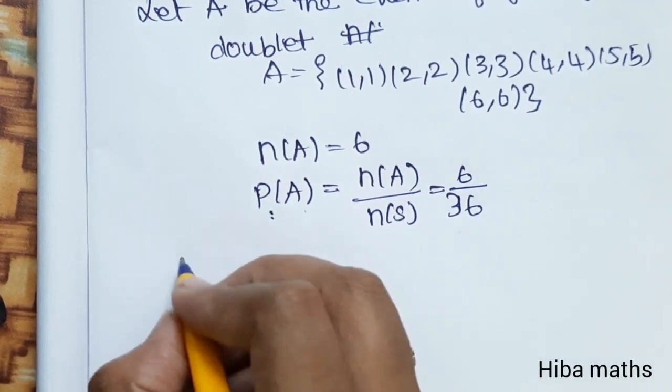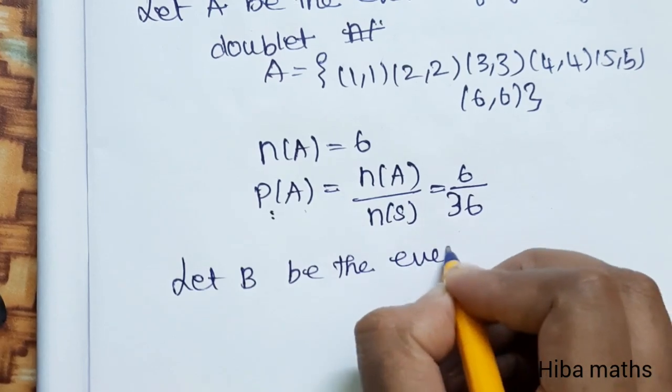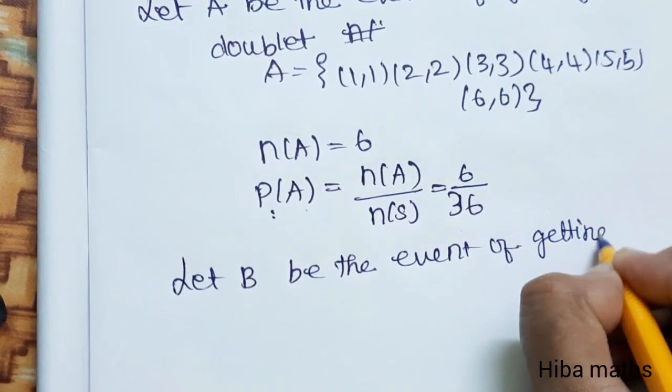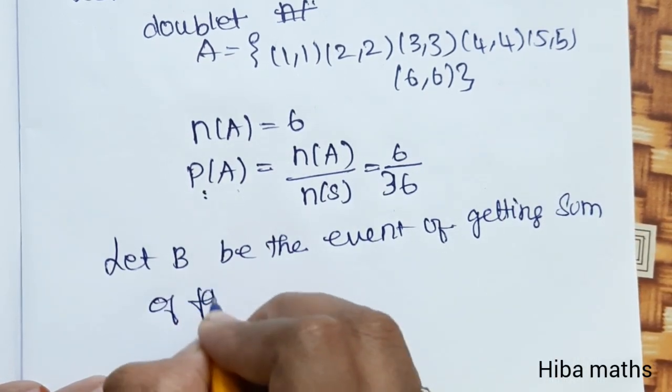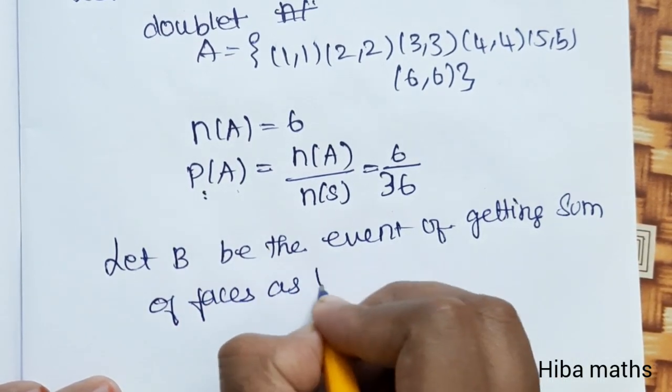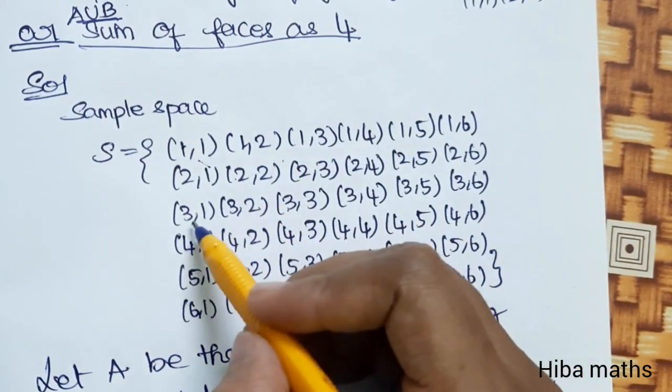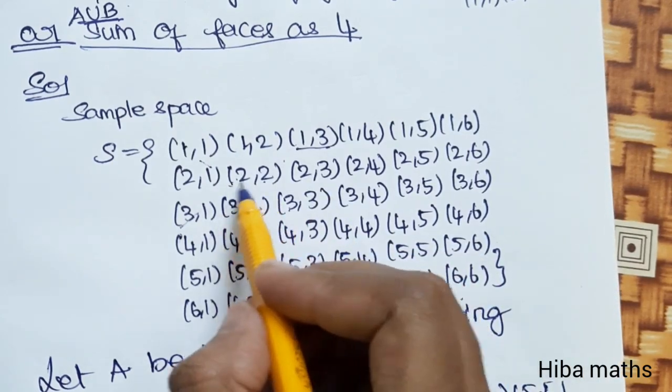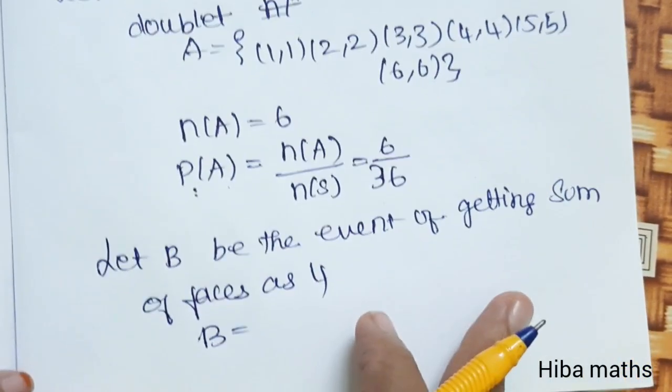Let B be the event of getting sum of faces as 4. If we add 2 numbers to get 4, we will find these in the sample space: 1,3 - 1 plus 3 is 4; 2,2 - 2 plus 2 is 4; 3,1 - 3 plus 1 is 4.